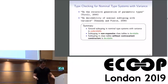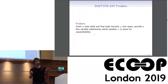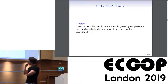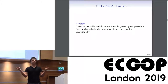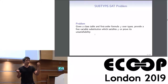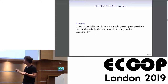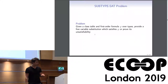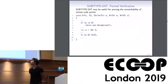Our work is about a different problem. Given a class table and a first-order formula, we need to decide if there is a ground substitution into the type variables of this formula that satisfies it, or prove that no such substitution exists — what we call the subtype-set problem.